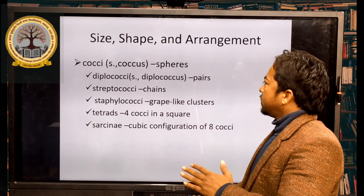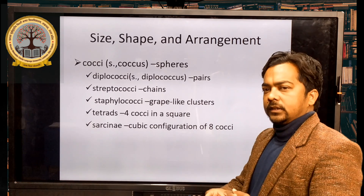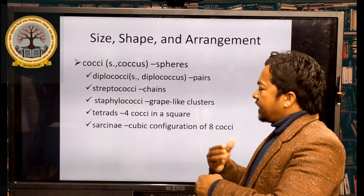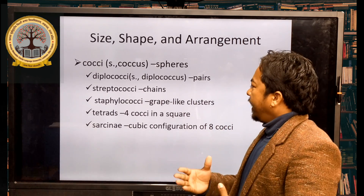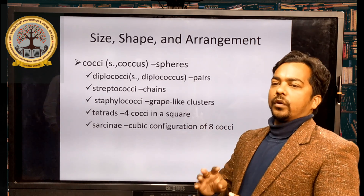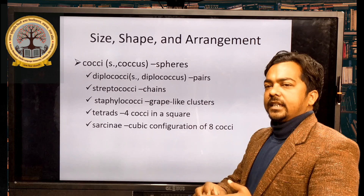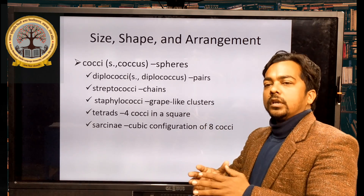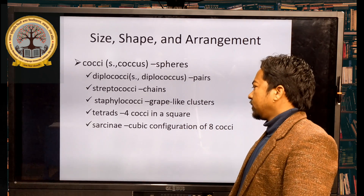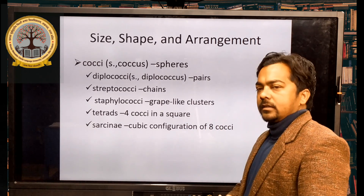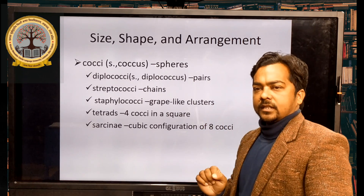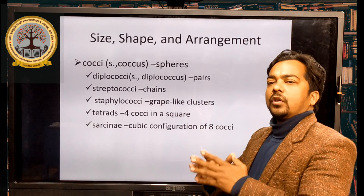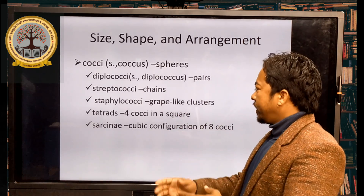Other arrangements of prokaryotic cells include staphylococci — prokaryotic cells arranged in a bunch, like a cluster of grapes. Another arrangement is tetra, meaning four cocci bacteria shaped in spheres arranged in a square. And sarcina — cocci spheres arranged in a cubic form — is known as sarcina.